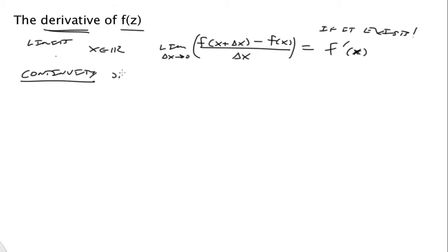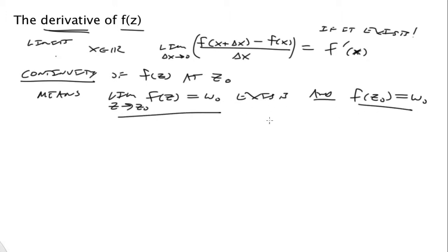So continuity of f of z at z0, some point, means the limit z going to z0 of f(z) equals w0 exists. And f evaluated at the point z0 equals the limit. So if these statements are both true, both it exists and the value of the function equals the limit, then that is the definition of continuity of a function in the complex plane.